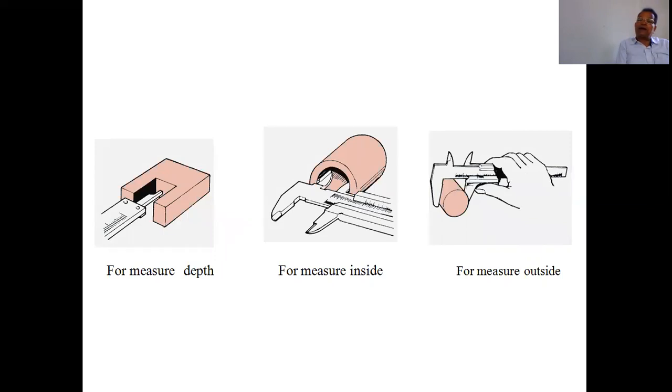How many measurements are there? The first measurement is outside diameter, the second is inside, and the third is depth. The outside diameter is on the right side. The inside is on the right side. The depth is on the left side.